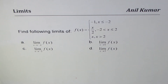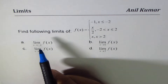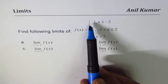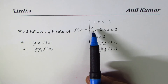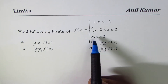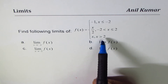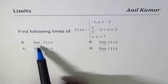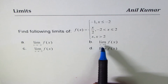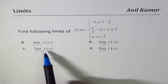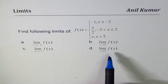I'm Anil Kumar and in this video we will discuss how to find the limit of a piecewise function. Find the following limits of f(x): f(x) equals -1 when x ≤ -2, x/2 when x is greater than -2 but less than or equal to 2, and x when x is greater than 2. Find the limit as x approaches -π, as x approaches 0, as x approaches -2, and as x approaches 2.